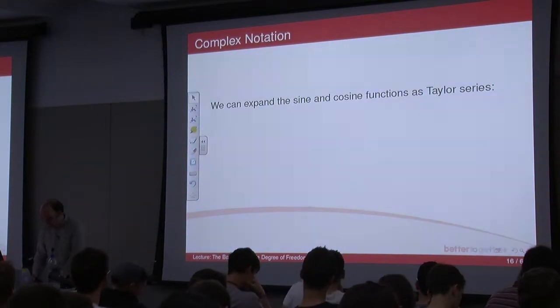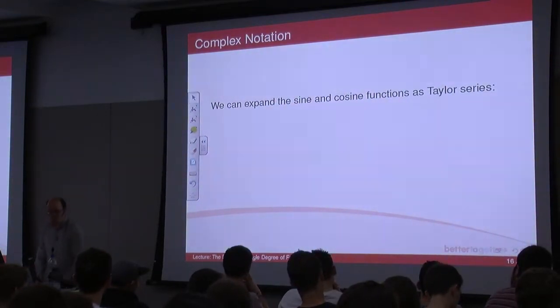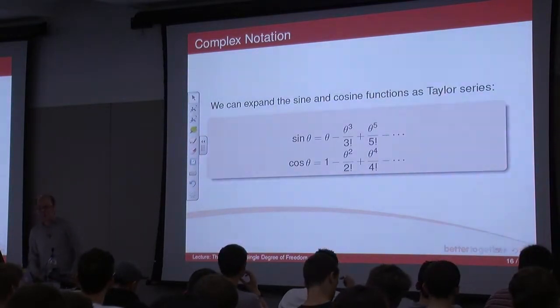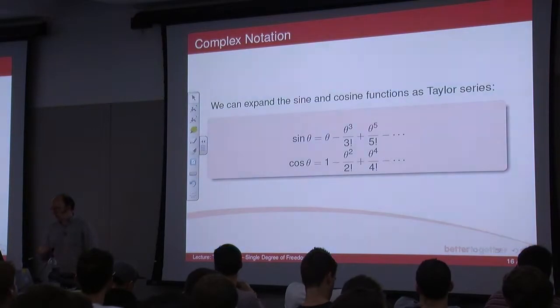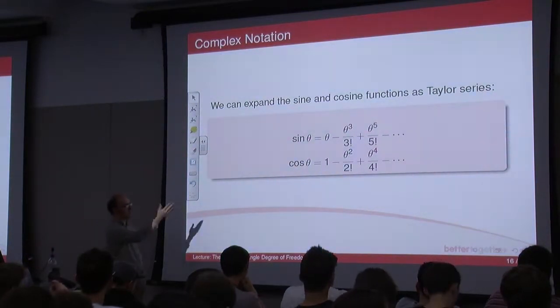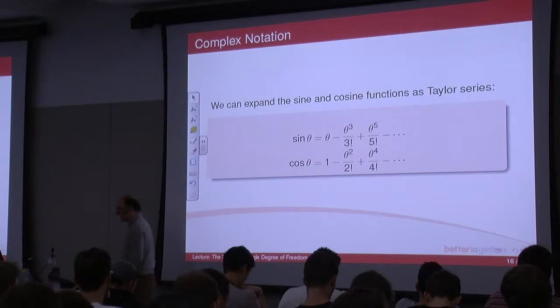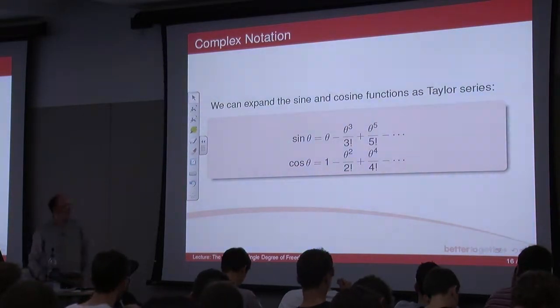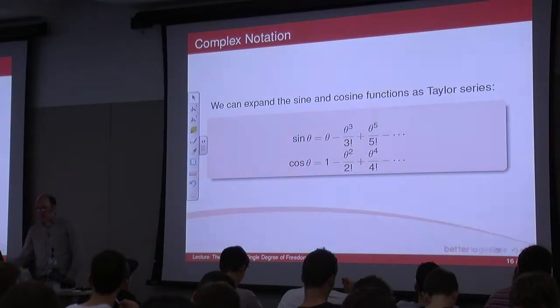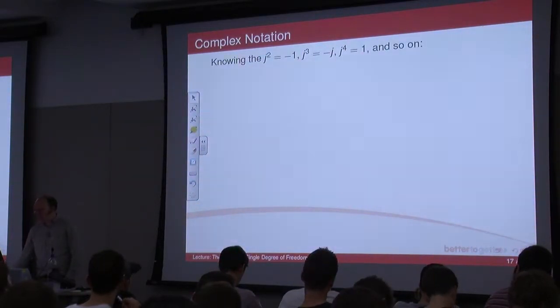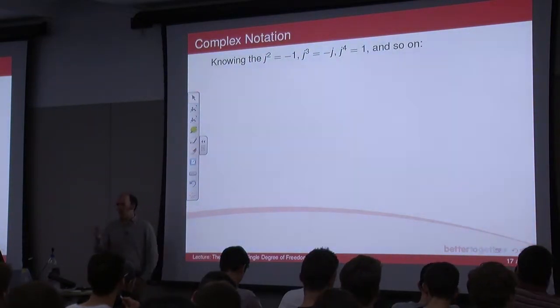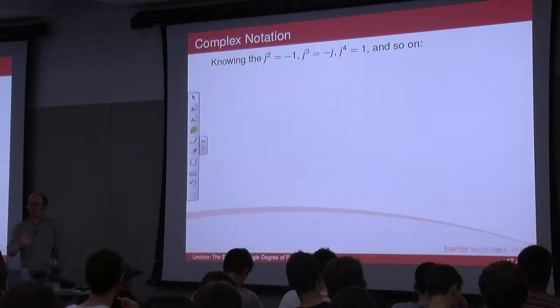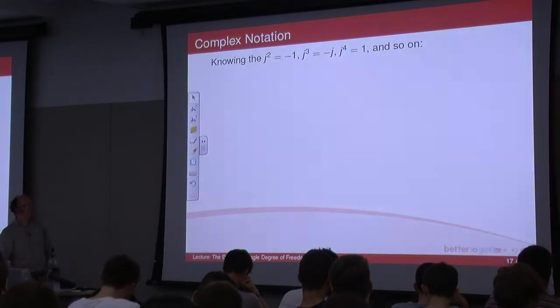We can expand cosine and sine as Taylor series. This is recalling first-year maths, I think, if not before, and you can expand them as a Taylor series, and you end up with these equations. Sine is theta minus theta cubed upon 3 factorial plus theta 5 upon 5 factorial and so on. And cosine is similar. You can combine those two together. Now, we know that j squared is minus 1. j cubed is minus j, because we've got minus 1 times by j, and j to the power of 4 is minus 1 squared, which is 1, and so on.